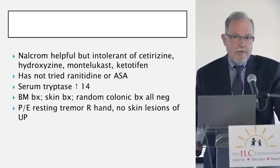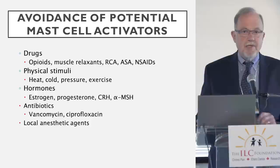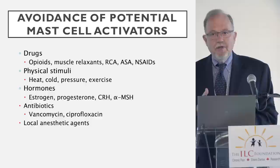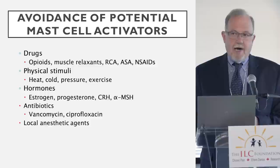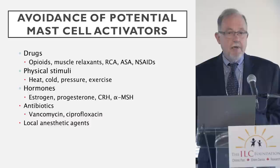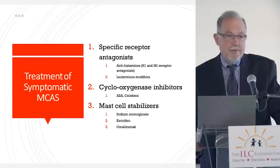This is somebody who has familial alpha-hypertryptasemia, which is that condition that runs in families related to EDS and POTS. When we have somebody like that, the first thing is there are some things known to activate mast cells in normal individuals, in people with mastocytosis, and in people with mast cell activation syndrome. So we advise that people, as best they can, try to avoid those things known to activate mast cells. The second thing is to use medications.